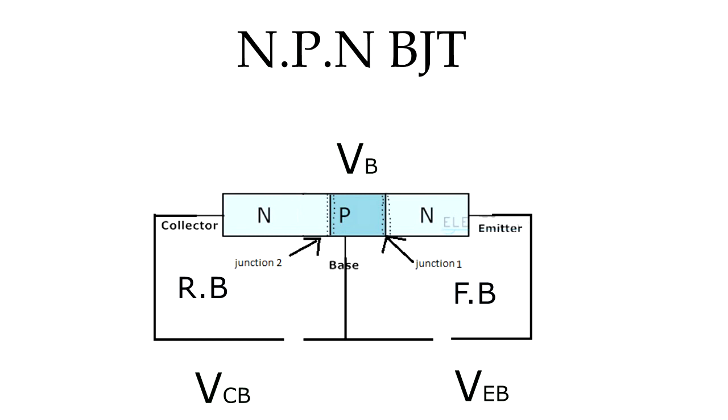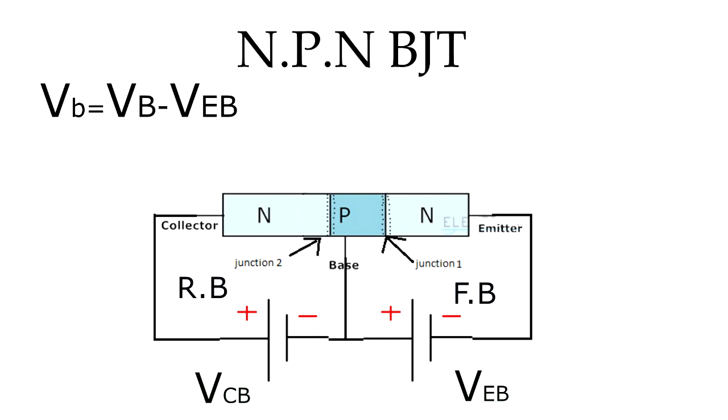After applying the volts, the potential will reduce and the new potential will be VB minus VEB. On the other hand, junction J2 is reverse bias, so the potential will increase and the new one will be VB plus VCB.